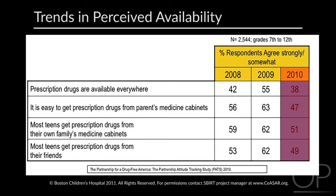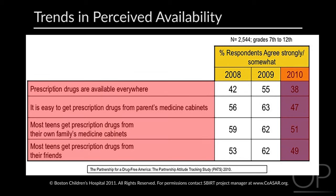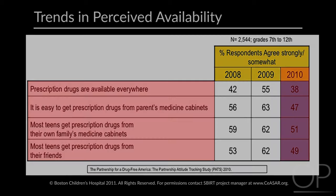However, as you can see, even in the 2010 column, the availability of prescription opioid pain medication is still unacceptably high for adolescents.